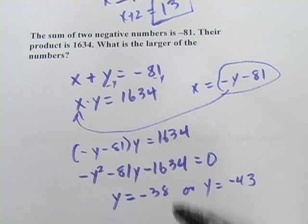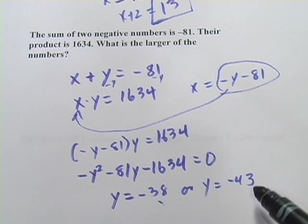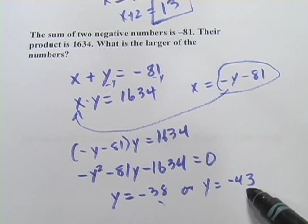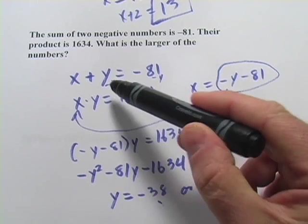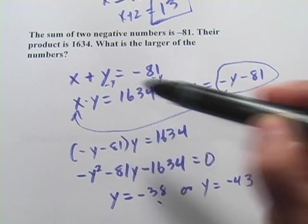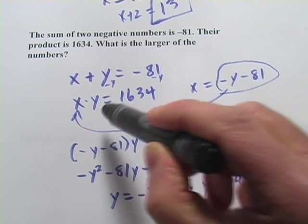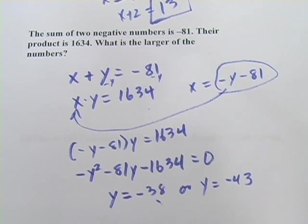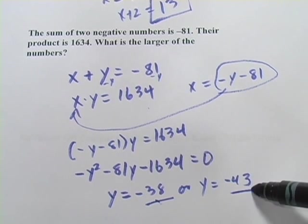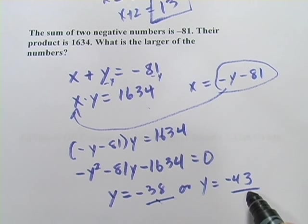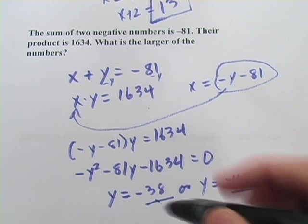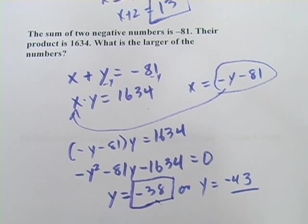And at this point, you might be thinking you have to go back and solve for x, but if you pick this one for y, you'll get this one for x. If you pick this one for y, you'll get this one for x. You've actually solved for both of them. And if you look at this, if you think about it, it wouldn't have mattered if I had solved this equation for y or x. The same thing would happen down here. So these are the two integers. And the question was, what is the largest of the numbers? And don't jump immediately to negative 43. That's biggest in magnitude. But the larger of the numbers is actually negative 38, because these are negative numbers.